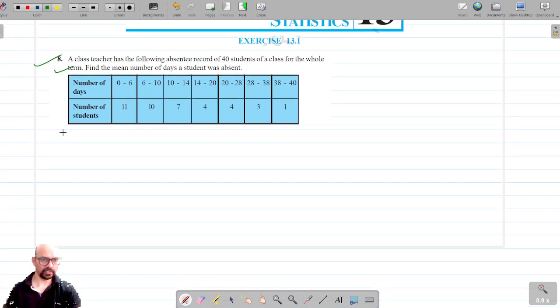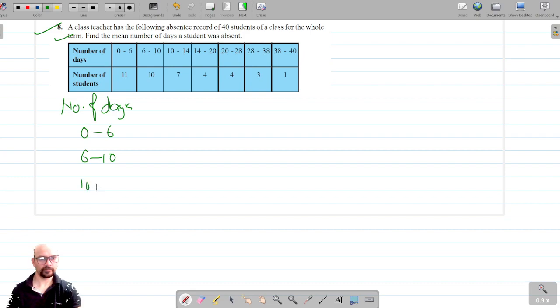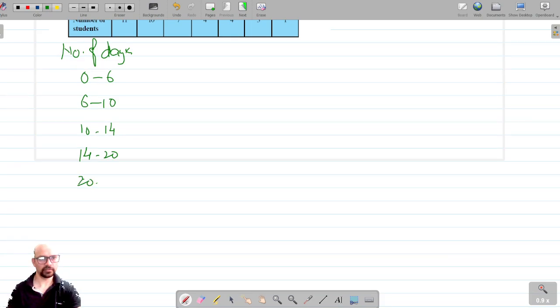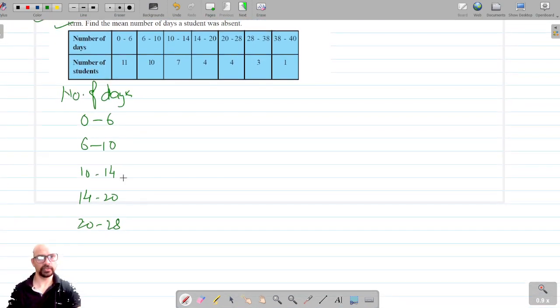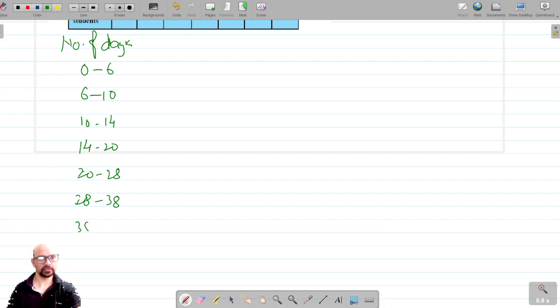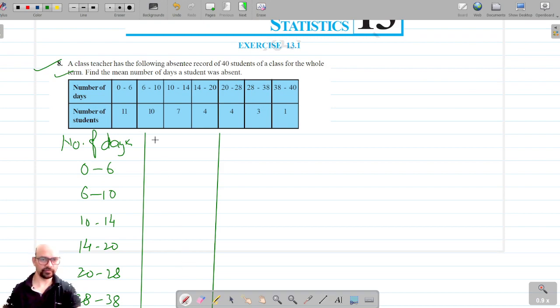So our class intervals are the number of days: 0 to 6, 6 to 10, 10 to 14, 14 to 20, 20 to 28, 28 to 38, and 38 to 40.